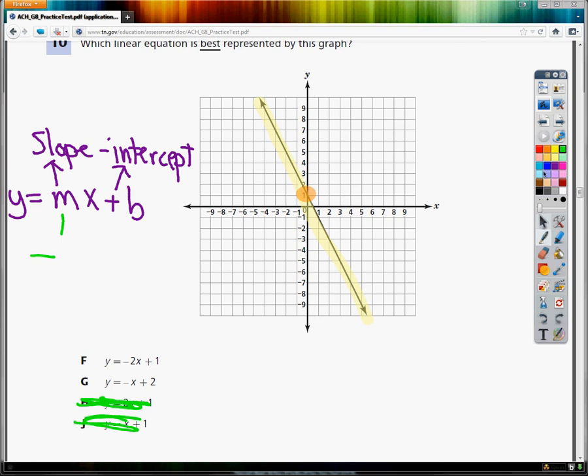So if I look down below, only one of the answers has a y-intercept of plus 1 and a negative slope. So the answer is F.